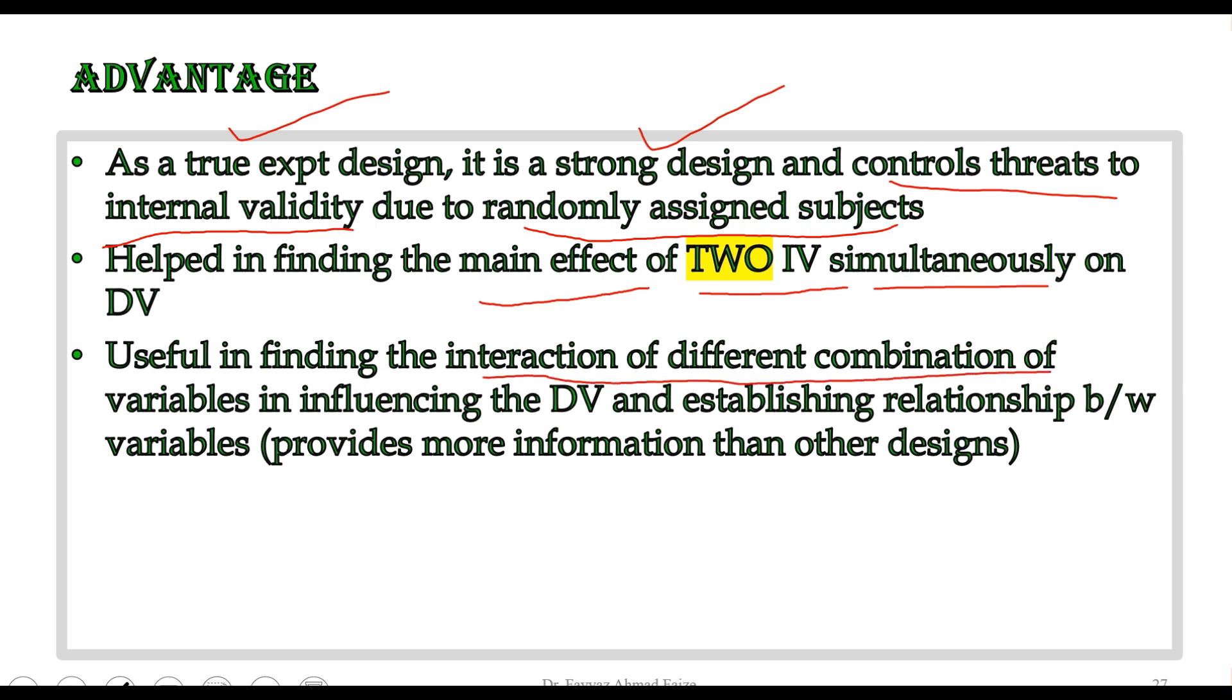Because there are different levels of independent variables, we can link the two IVs and see how the different levels combined together influence the DV. This is how we find the interaction level, where we look at one independent variable and see how it is affected by the next independent variable.